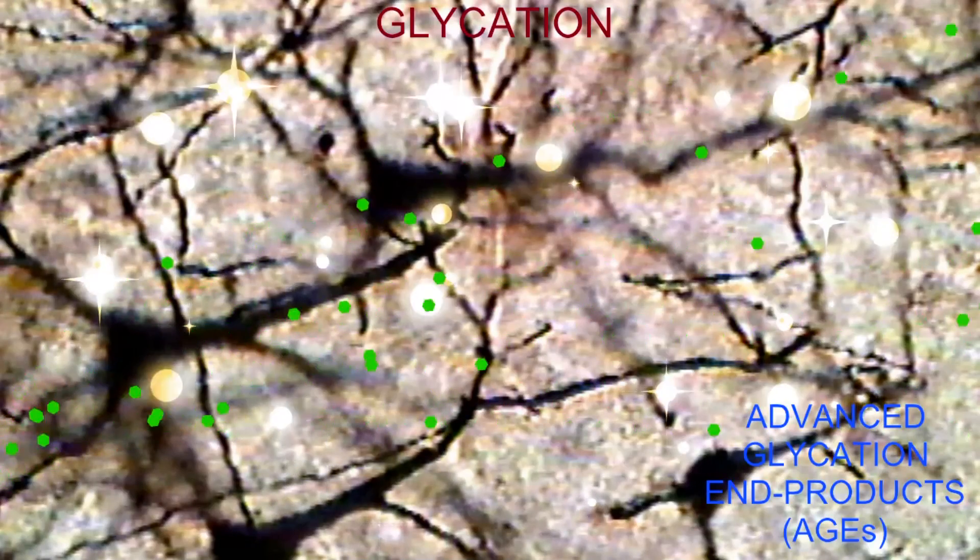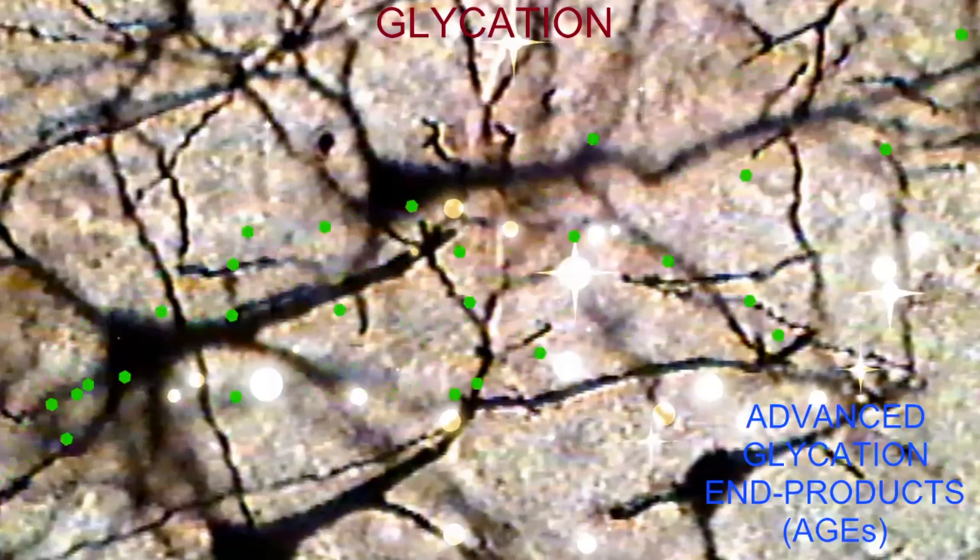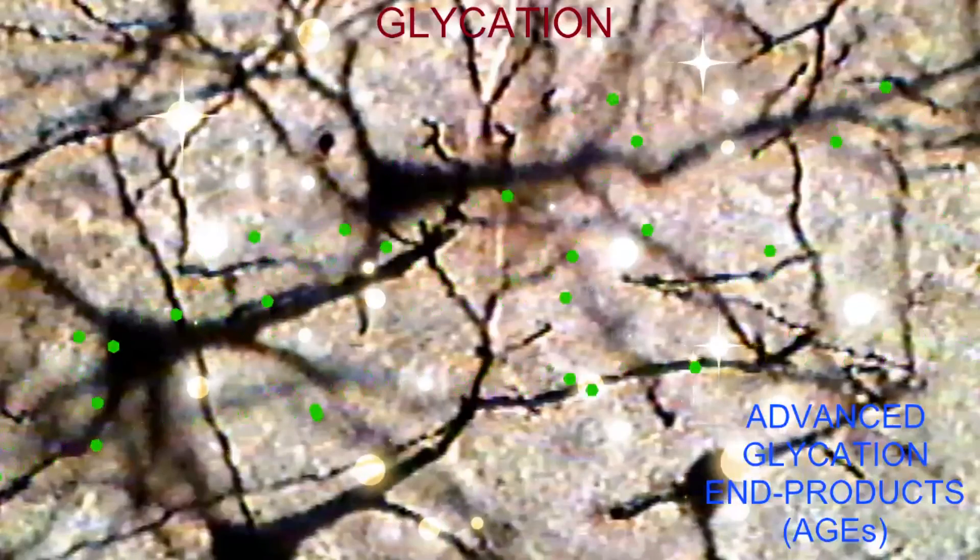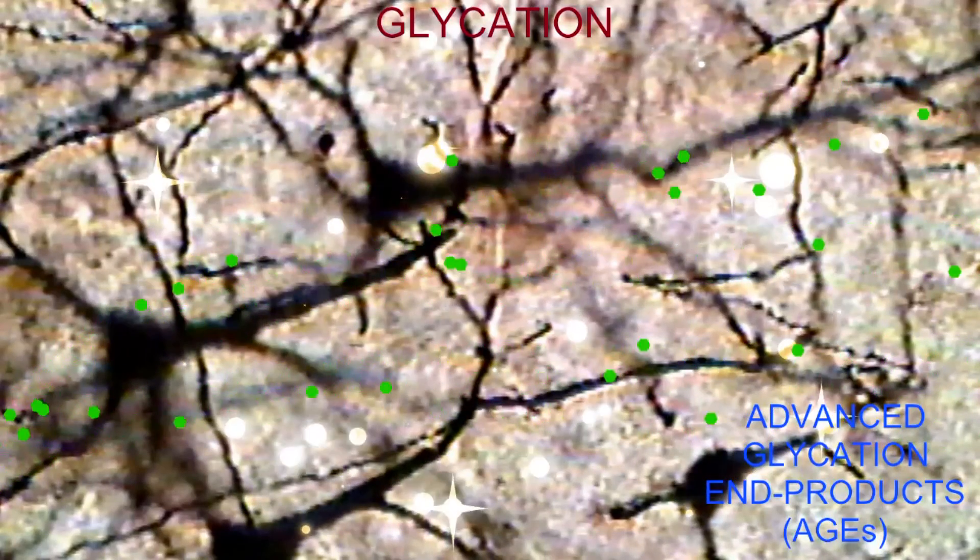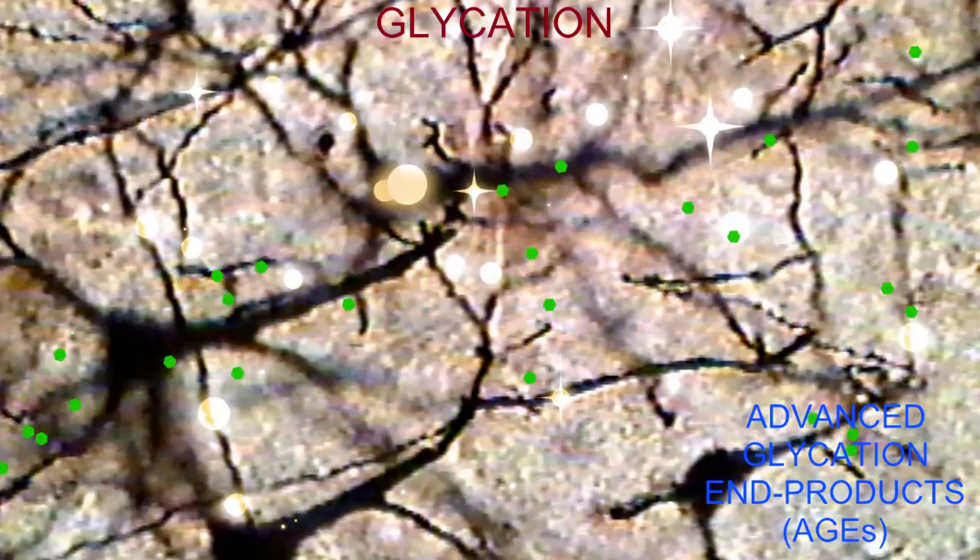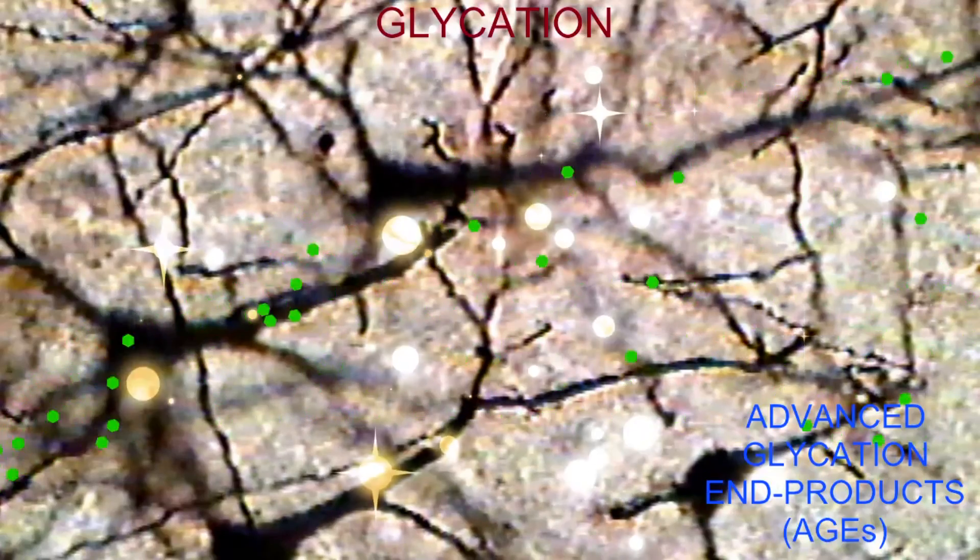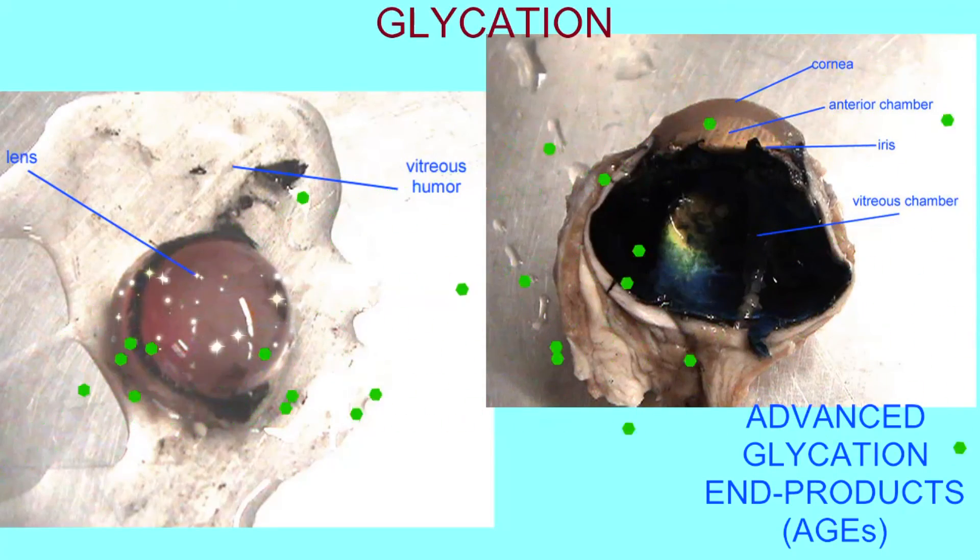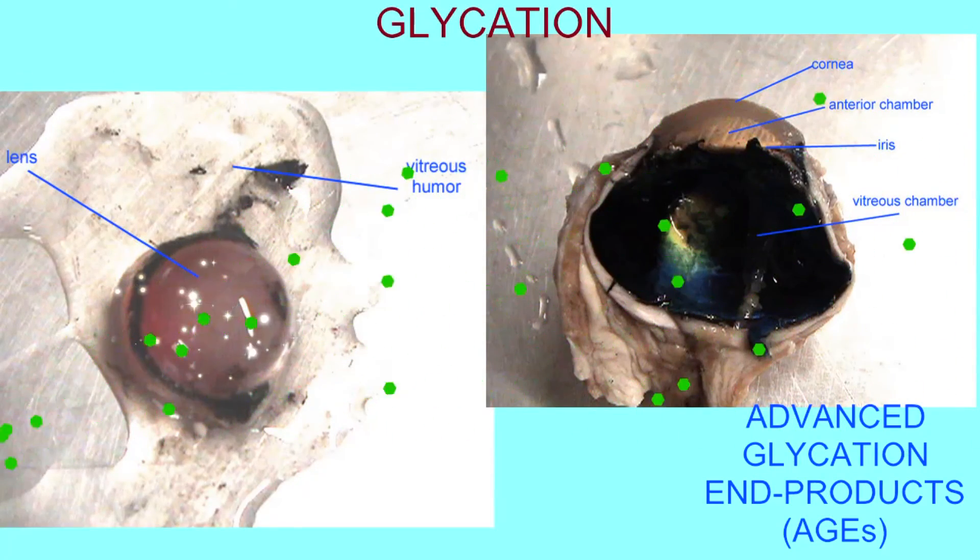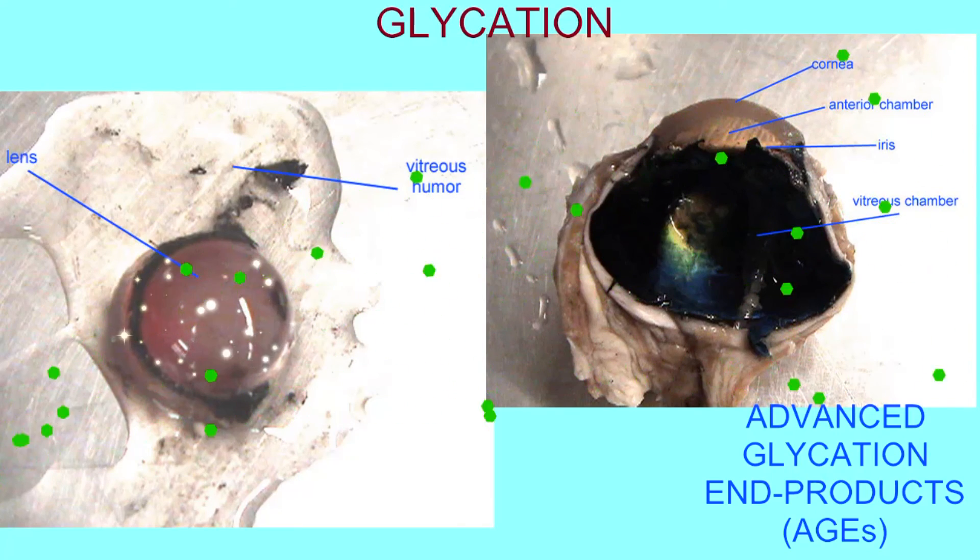Glycation of proteins in the brain, such as the beta-amyloid protein, increases the formation of the plaques which are the cause of Alzheimer's disease. Glycation of proteins in the eye changes their shape and can decrease vision and lead to cataract formation.